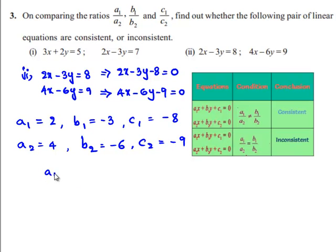The ratio a1 by a2 equals 2 by 4, which is 1 by 2, and b1 by b2 equals minus 3 divided by minus 6, which is also 1 by 2.